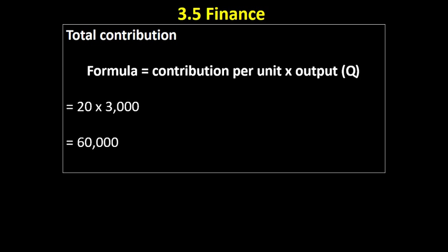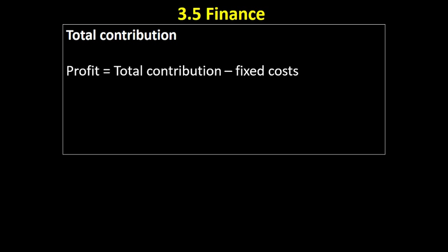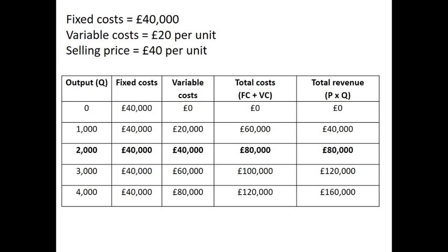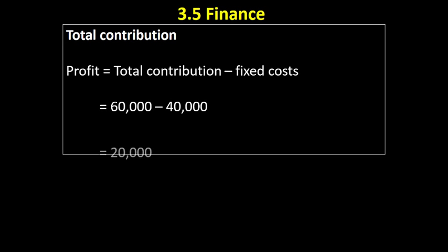We can use this information to find how much profit is being made. If we know the contribution and fixed costs, we don't need to calculate total revenue minus total costs directly. The fixed costs were £40,000 and total contribution is £60,000, so: £60,000 minus £40,000 gives us a total profit of £20,000 when selling 3,000 units. We can verify this: total revenue of £120,000 minus total costs of £100,000 also equals £20,000.